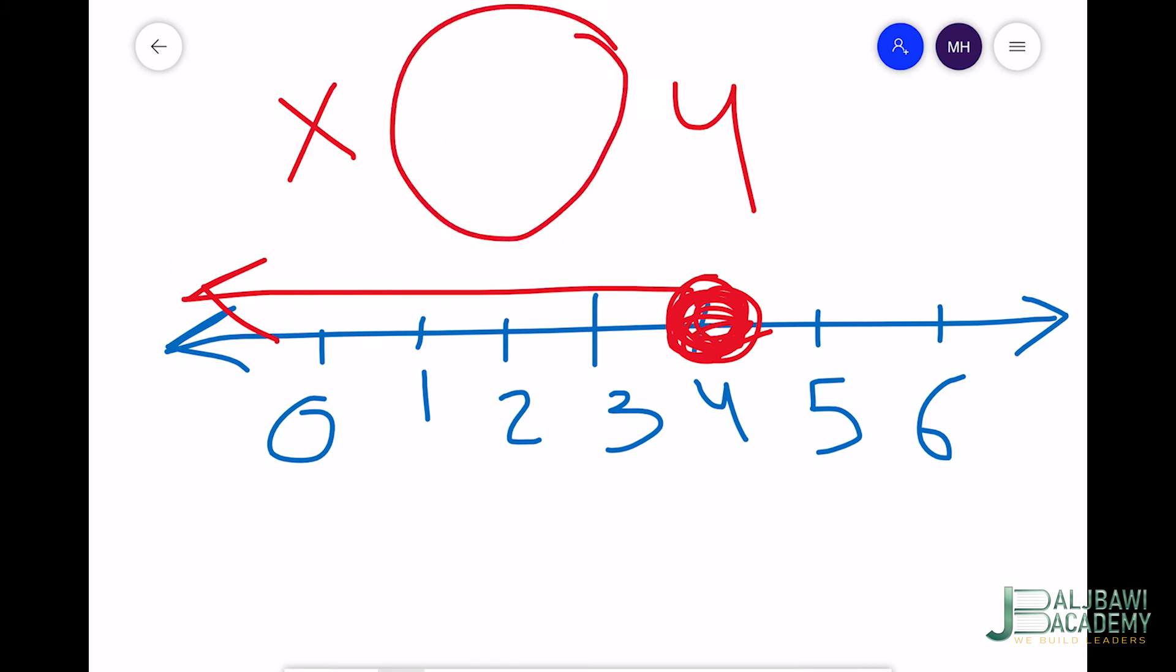Because the arrow goes left, this represents values less than 4. But because 4 can be a solution and the circle is shaded, I add 'equal'. This means x represents all the values less than or equal to 4.